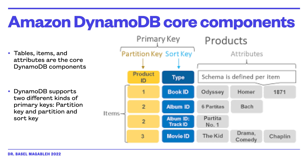The core components of DynamoDB are tables, items, and attributes. Items are a group of attributes that are uniquely identifiable among all other items. Attributes are fundamental data elements that do not need to be broken down further. DynamoDB supports two kinds of primary keys: the partition key, which is a simple primary key composed of one attribute, and the partition key combined with a sort key, known as a composite primary key composed of two attributes.